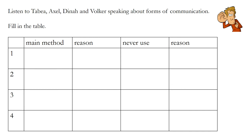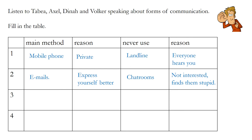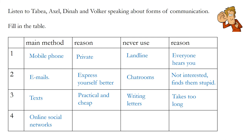Number one, Tabea, uses mobile phone as the main method because it's private, and never uses the landline because everyone can hear. Number two, Axel, uses emails because they can express themselves better, and never uses chat rooms because they're not interested and find them stupid. Number three, Dina, uses texts because it's practical and cheap, and never writes letters because they take too long. Number four, Volker, uses online social networks and wants to immediately comment on friends' photos, but doesn't like video calls — he wants to chat to friends but not see them on screen.